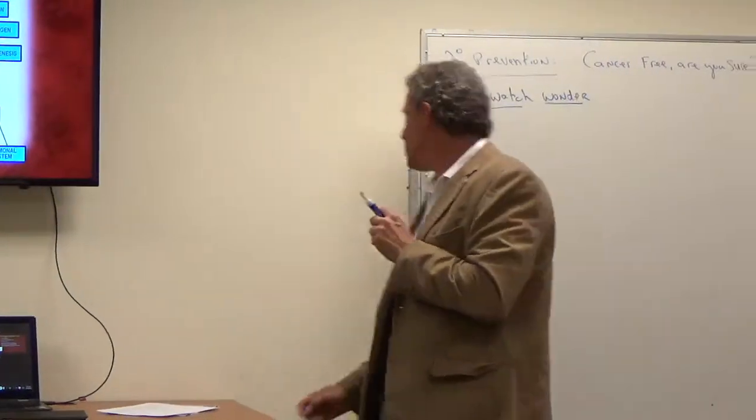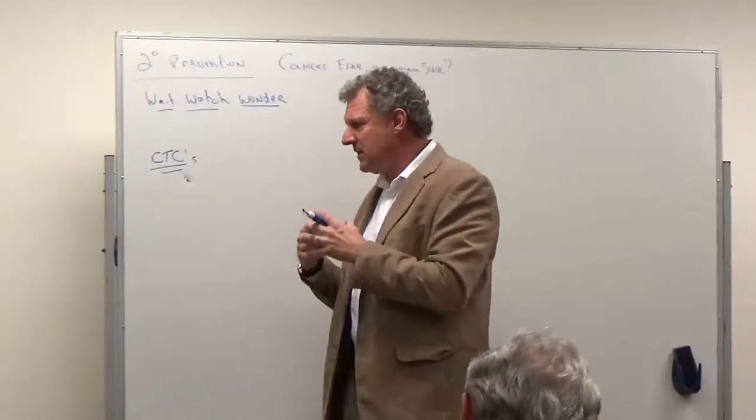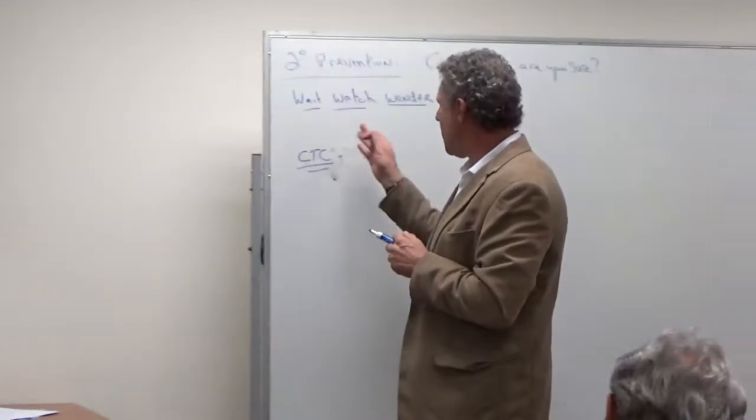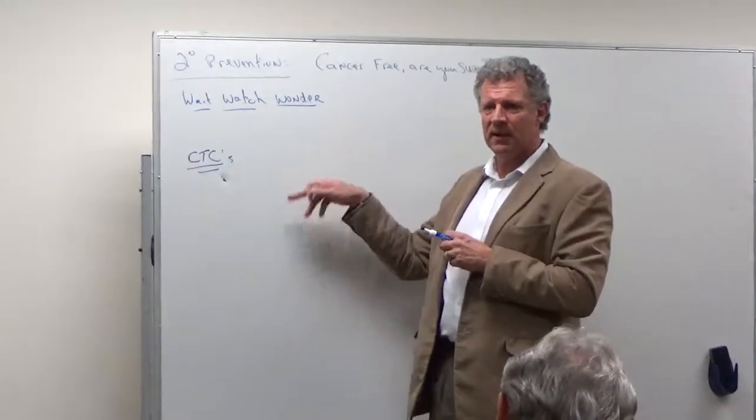And with those circulating tumor cells, so if you had, let's say you had breast cancer, you've done treatment, the Circulating Tumor Cell comes back at seven or eight. Well, what are we going to do to get it down to two?